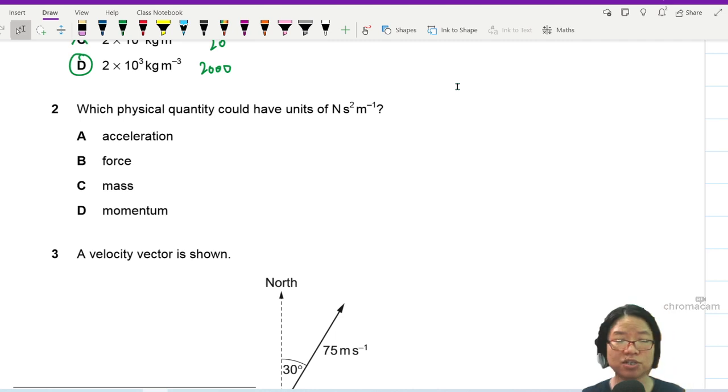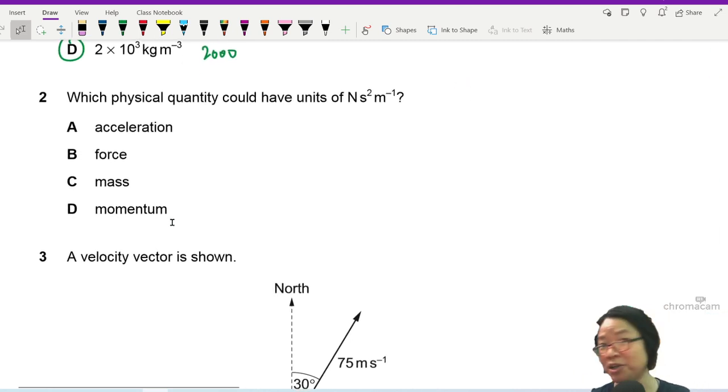Okay, so this one, the easiest way or the most straightforward way, it may not be the fastest, but the most straightforward way is to break down all these quantities into base SI, starting with the one that is given.